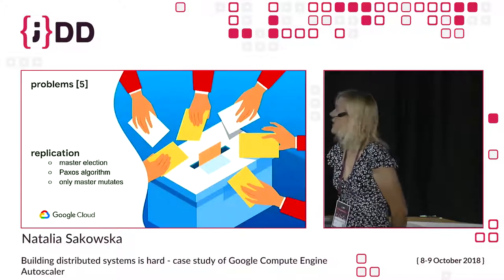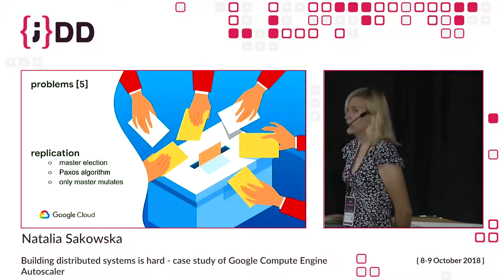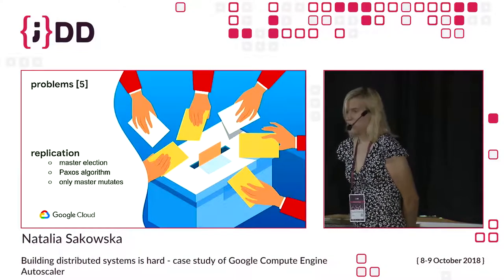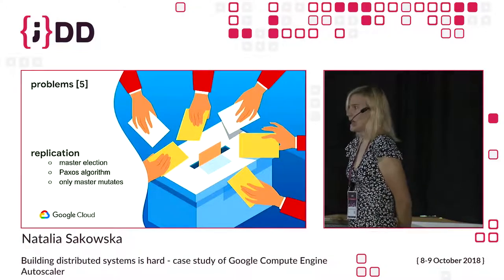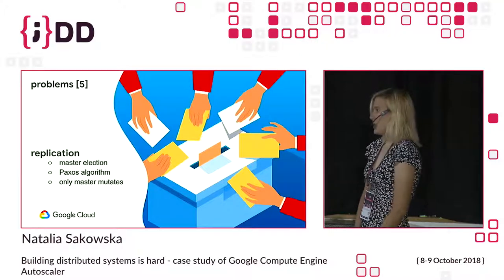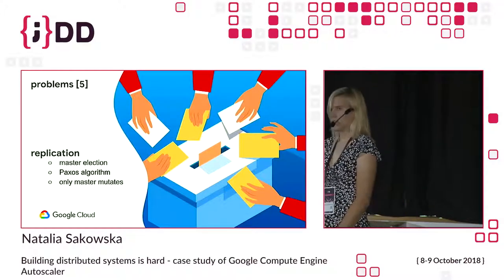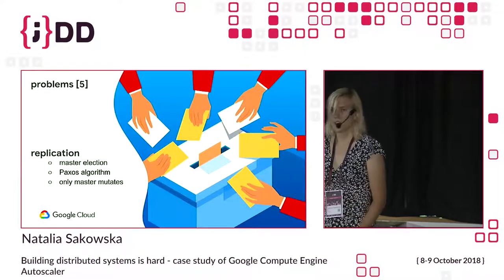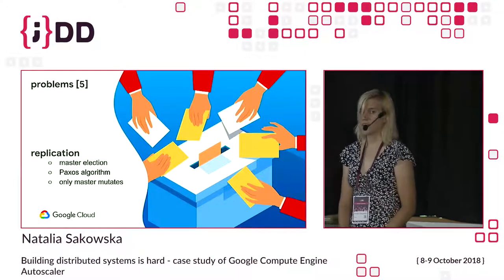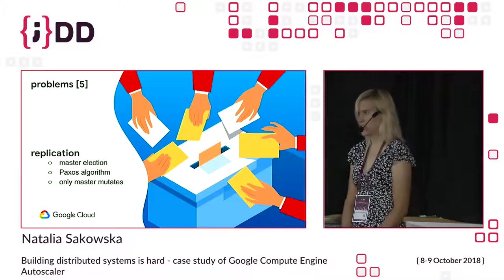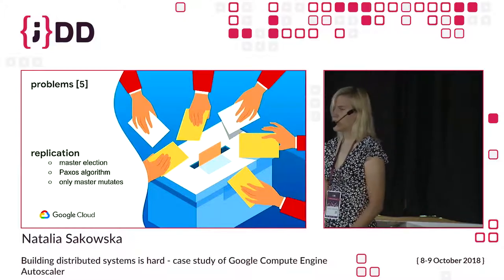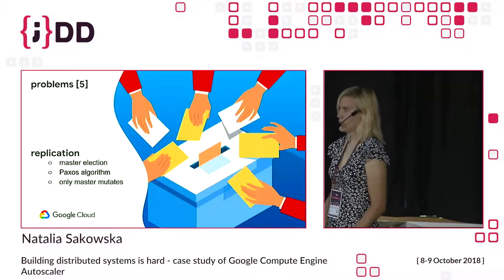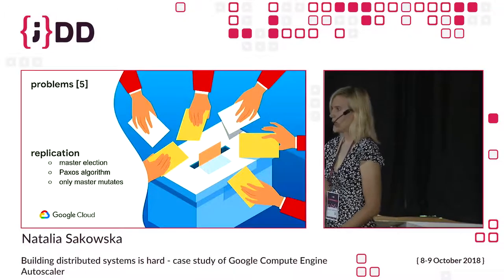The next interesting thing is replication. At Google, we really believe in replication — no serious service can run in only one copy. It should be replicated. Some tasks can go down — it can be a hardware problem or a software problem where your application just crashes. You should always have other replicas that can take over and do the job the primary replica was doing.